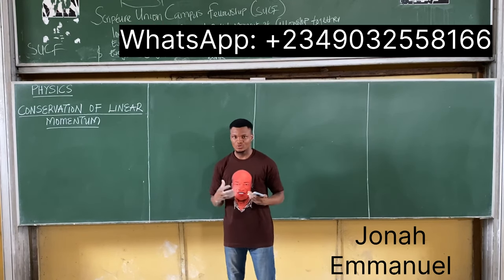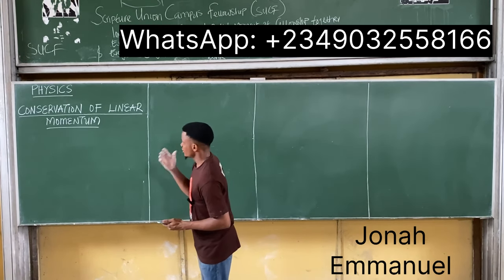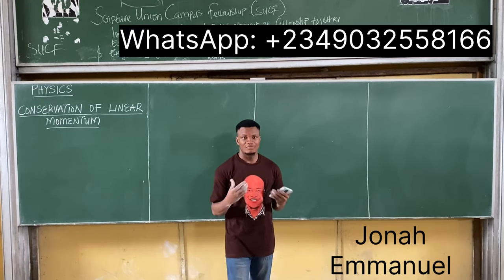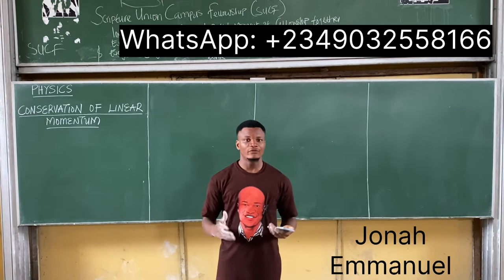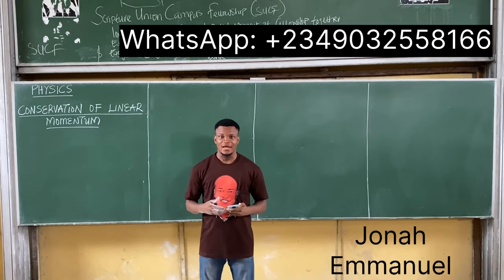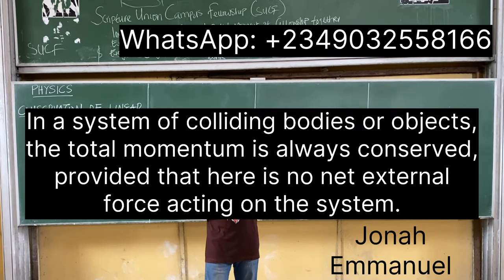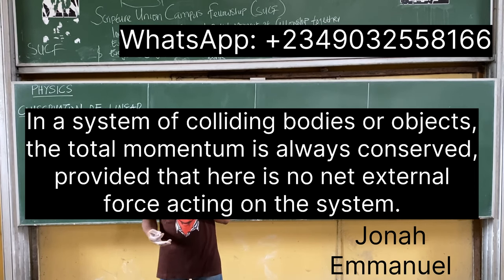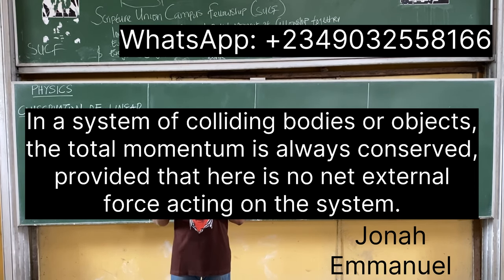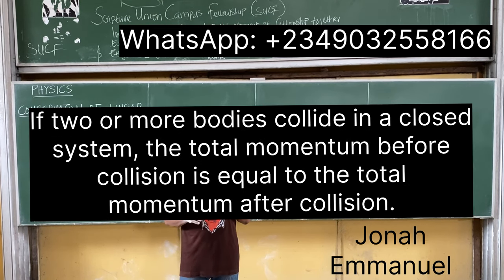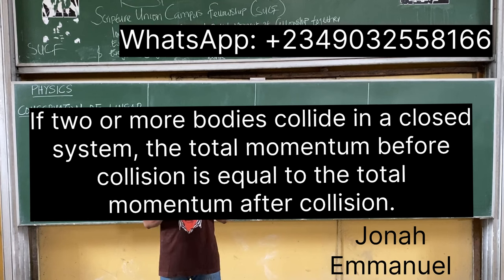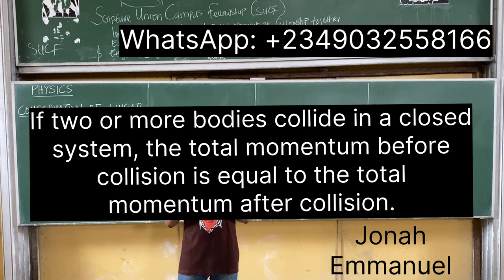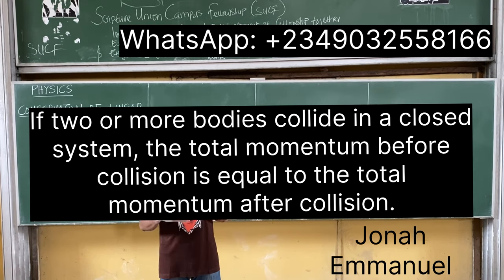Welcome to today's class. This class will be considering the conservation of linear momentum. The principle of conservation of linear momentum states that in a system of colliding bodies or objects, the total momentum is always conserved, provided that there is no net external force acting on the system. It can also be stated that if two or more bodies collide in a closed system, the total momentum before collision is equal to the total momentum after collision.